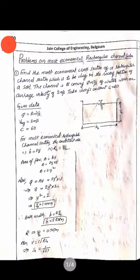Let us take a problem here. Find the most economical cross section of a rectangular channel which is to be dug in the rocky portion of the soil. The channel is to convey 8 m³ per second of water with an average velocity of 2 m per second. Take Chezy's constant C as 60. The data given are: discharge Q = 8 m³/s, average velocity = 2 m/s, and Chezy's constant C = 60.